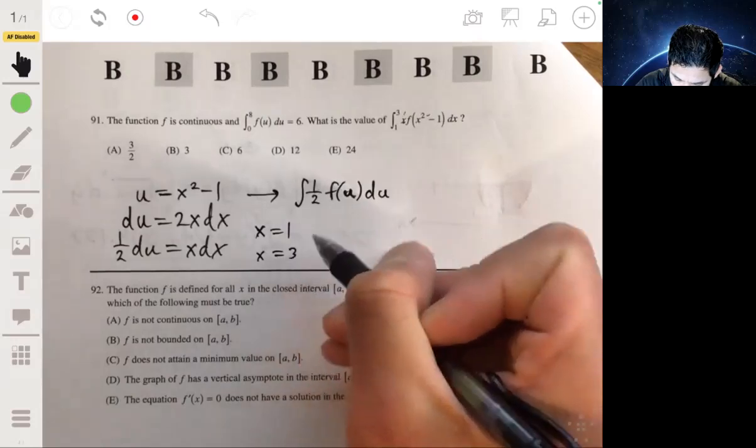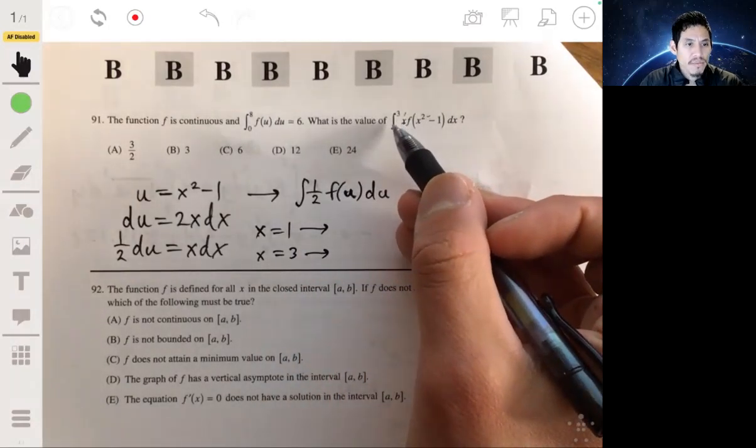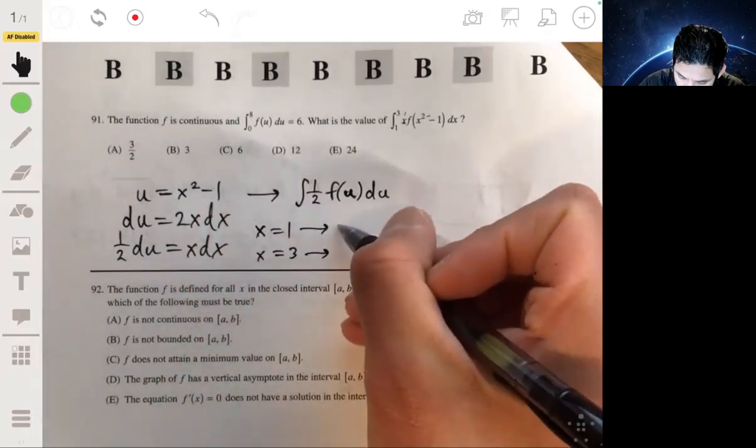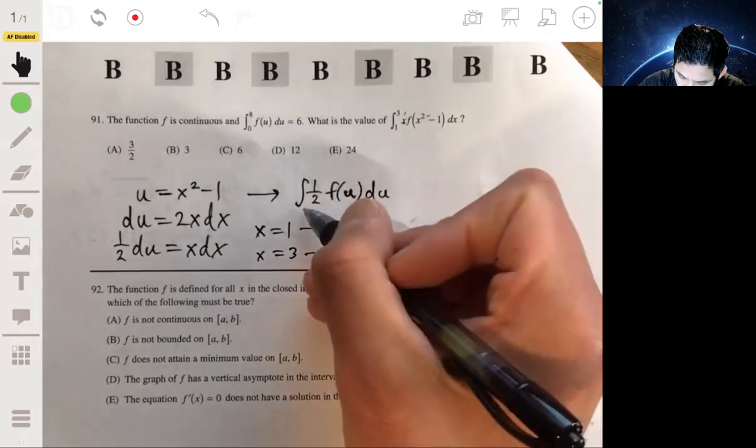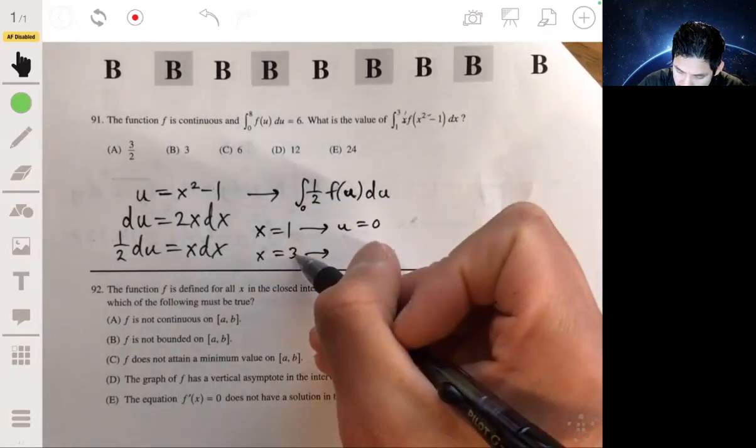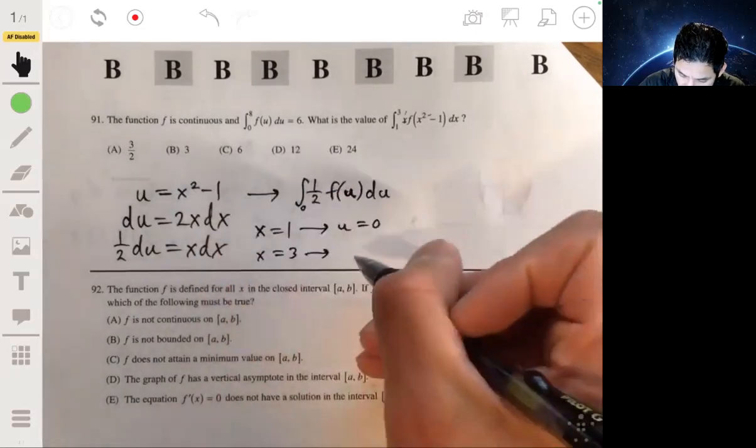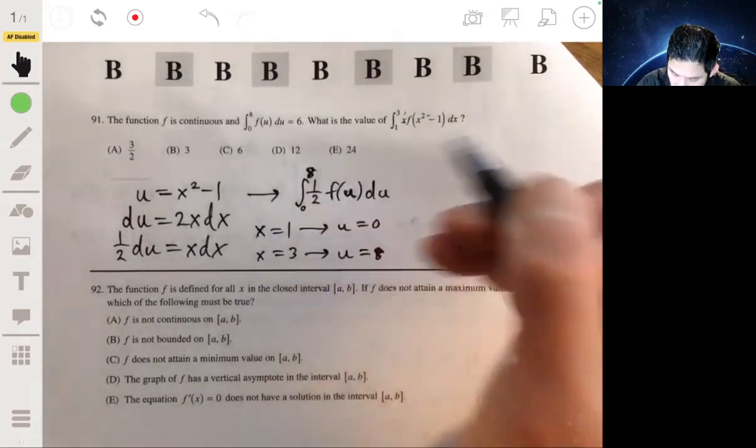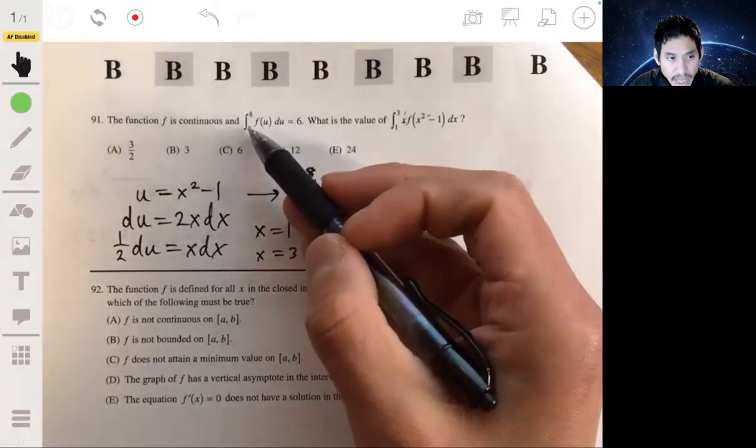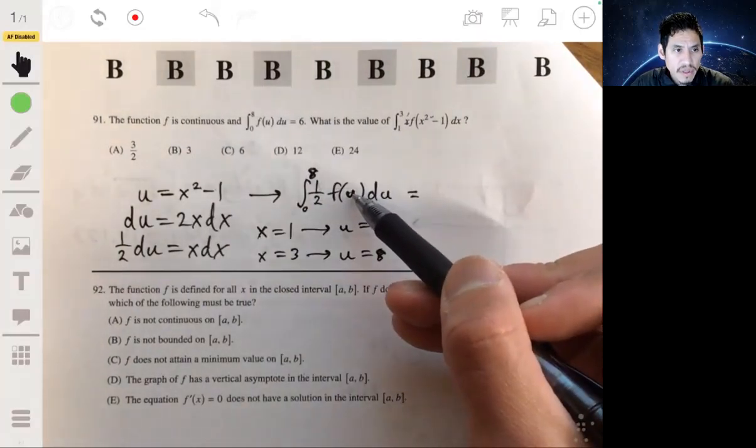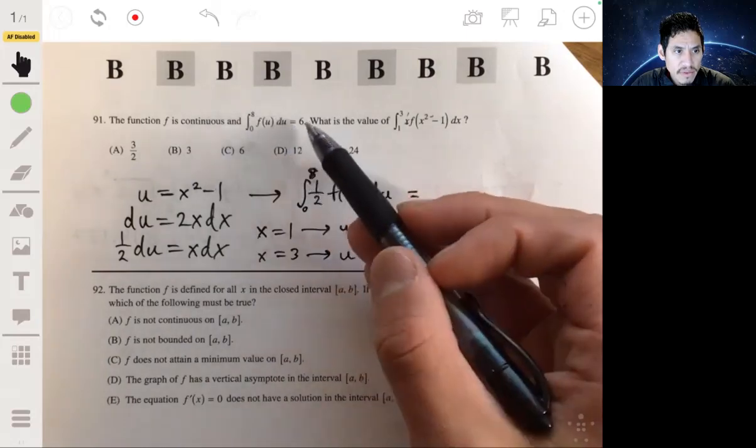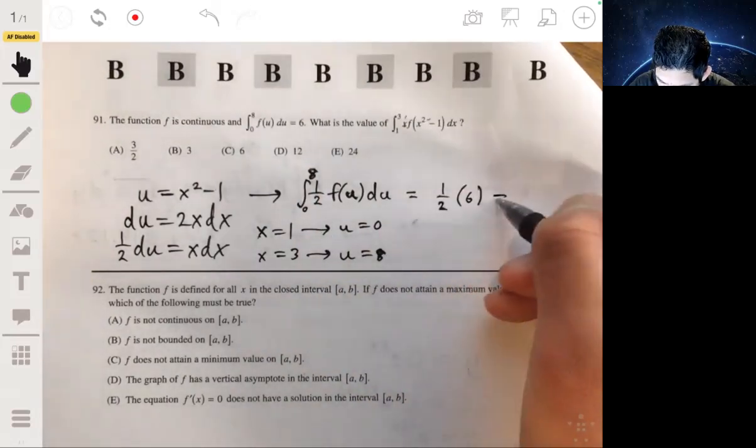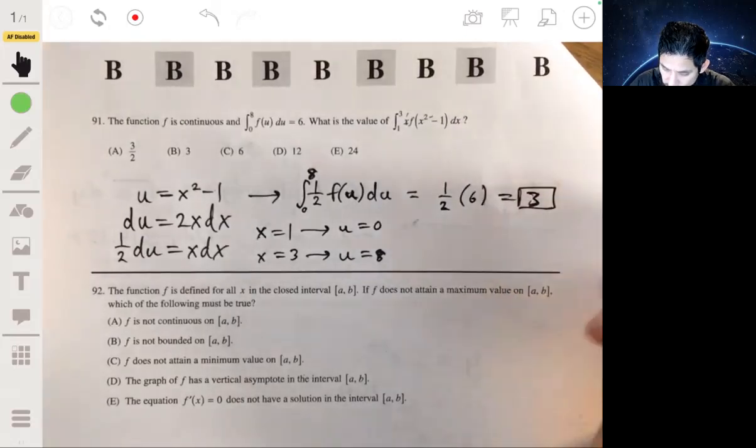But we have to find those endpoints. And these endpoints are in terms of x. We have x equals 1 and x equals 3. And we got to rewrite these endpoints in terms of u. When x is 1, u will be x squared minus 1, or 1 squared minus 1, which means u will be 0. And then when x is 3, u is equal to 3 squared minus 1, 9 minus 1, or 8. And this is exactly what we have here, almost. This is 1 half of f of u. This is a full f of u. So if a full f of u is 6, 1 half of f of u is simply 1 half of 6. So this is 1 half times 6, or 3. And that's the answer, b.